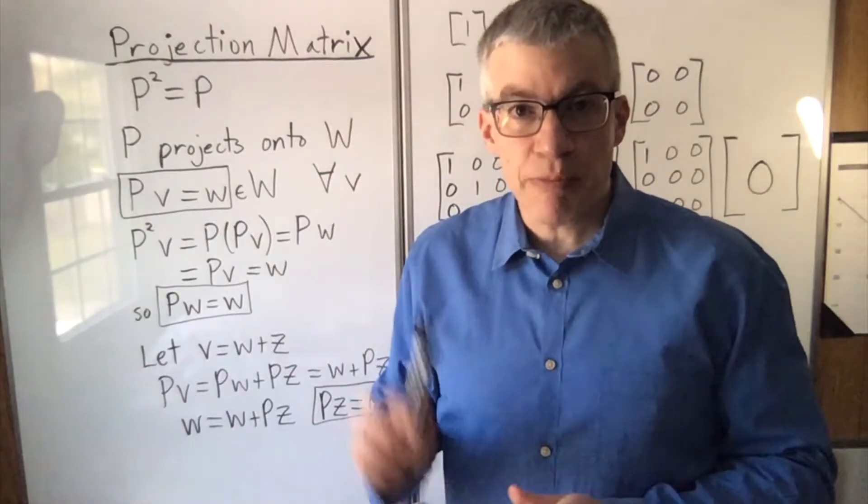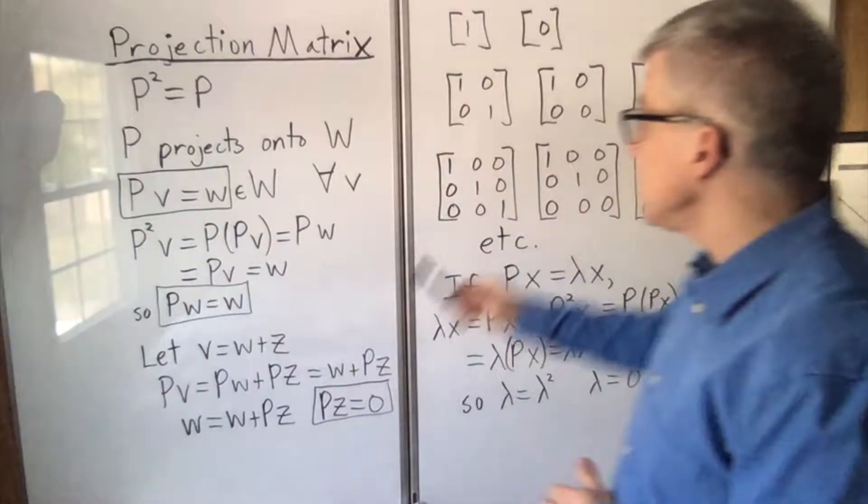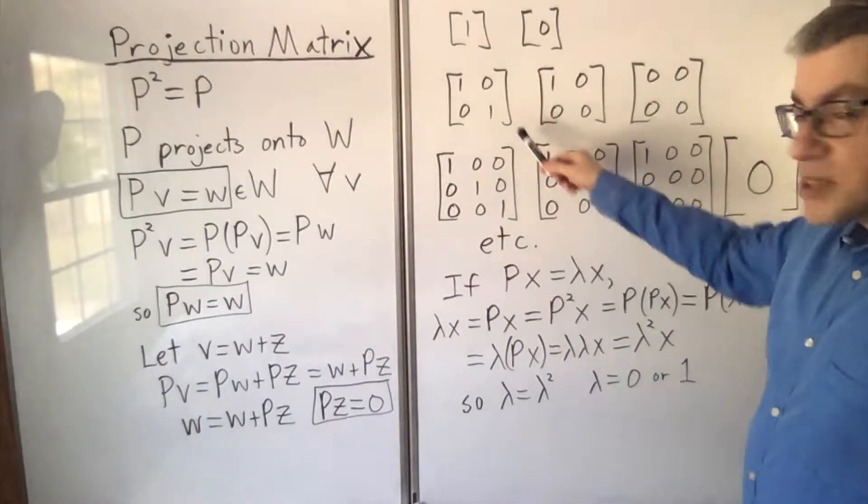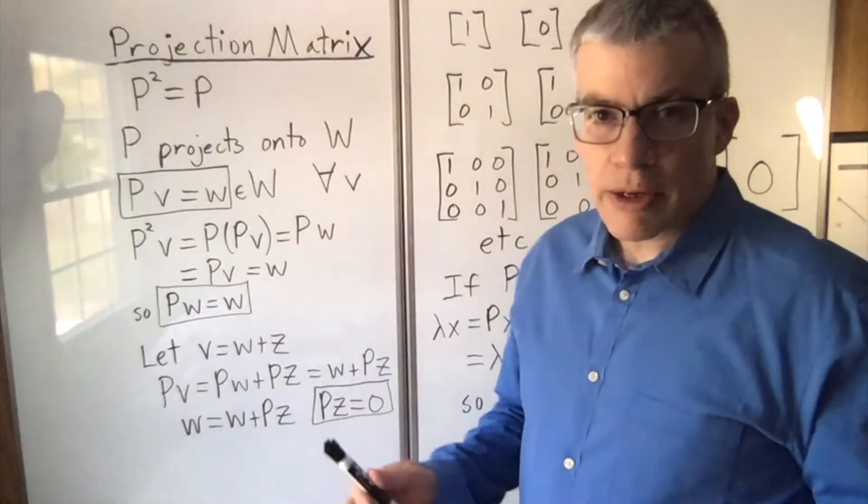Every projection matrix can be diagonalized, and it will have 1s and 0s only on the main diagonal. How can we show this?